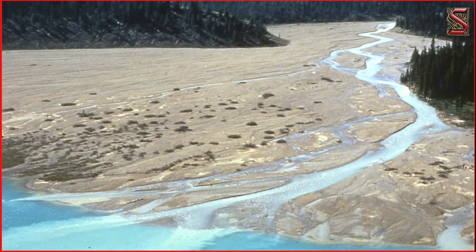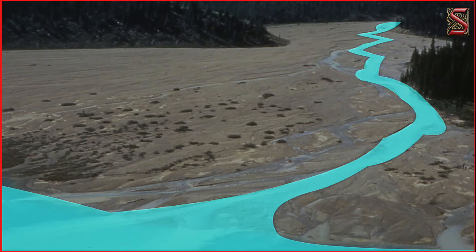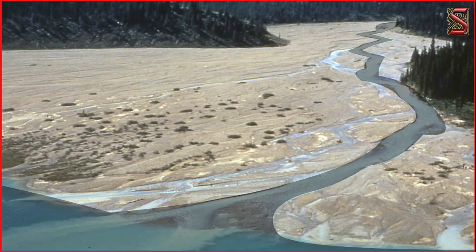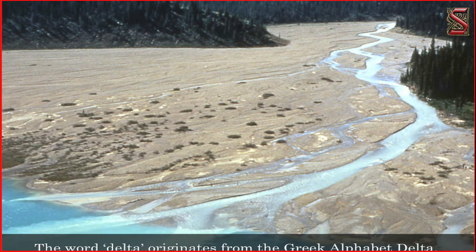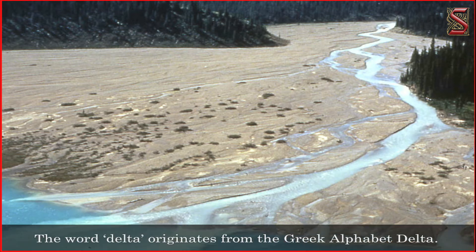Once the rivers reach the sea, the fine material that has not been deposited gets dropped at the mouth of the sea, which forms a delta. The word delta originates from the Greek alphabet delta.